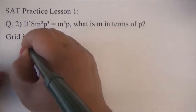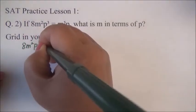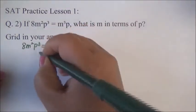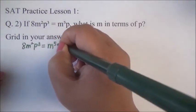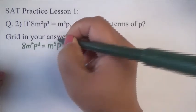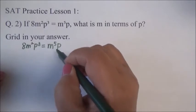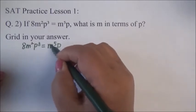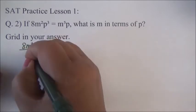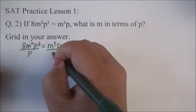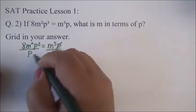So, I'm going to rewrite this problem. 8M squared times P cubed is equal to M to the 5th power times P. So, first of all, we don't want P here because we want to make M by itself. So, we're going to divide both sides by P.